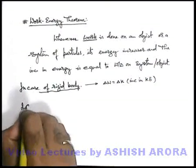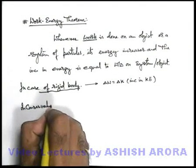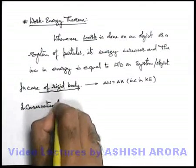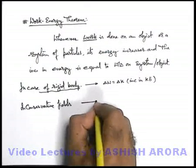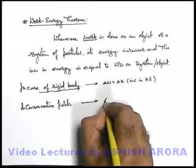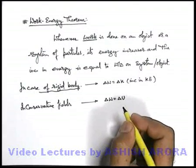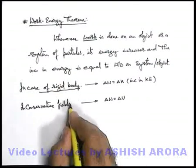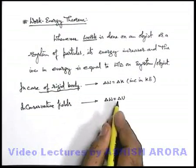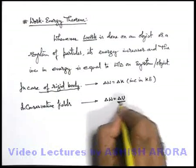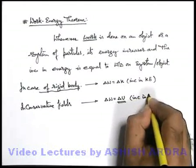If we talk about conservative fields, we can simply state that in conservative fields whenever work is done it is equal to the increase in potential energy of the system, because in a conservative field whenever some work is done it is stored in the form of potential energy in the system. So it can be written as increase in potential energy.